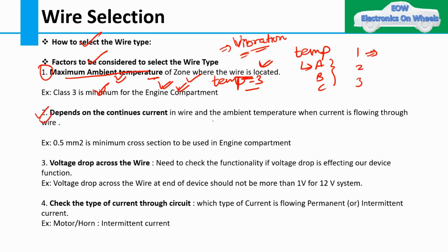The second factor is the continuous current flowing through the wire. If the continuous current is higher, there will be a temperature increase on that wire and a chance of burning. There are two types of current: intermediate current and continuous current. Intermediate or transient current occurs as spikes for a short period of time, while continuous current is one that remains at a particular amplitude for a longer period of time.